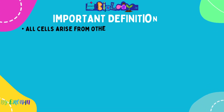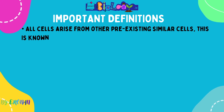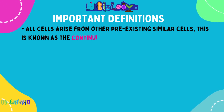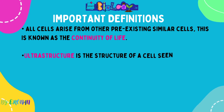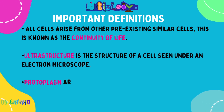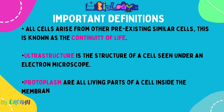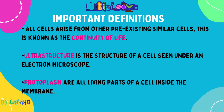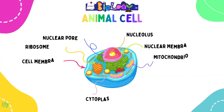Some important definitions: all cells arise or come from other pre-existing similar cells — this statement is known as the continuity of life, also known as biogenesis. Ultrastructure is the structure of a cell seen under an electron microscope — you must say electron microscope. Protoplasm refers to all living parts inside the membrane of a cell. Ultrastructure cannot be seen using a light microscope.